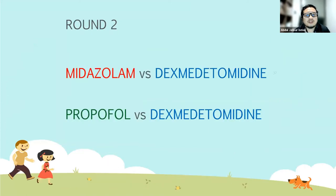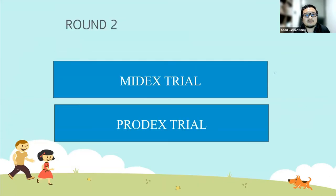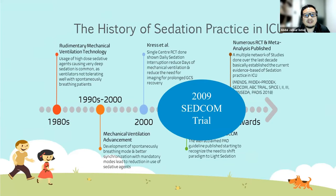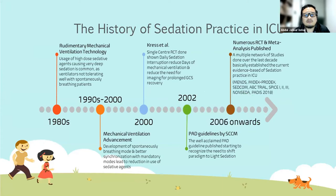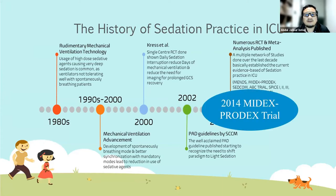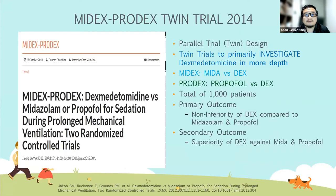Round two: as dexmedetomidine became more popular, the MIDEX-PRODEX twin trials were conducted in 2014 — parallel trials with 1,000 patients total. MIDEX compared midazolam versus dexmedetomidine; PRODEX compared propofol versus dexmedetomidine. The primary outcome was non-inferiority of dexmedetomidine compared to midazolam and propofol. The 2013 PAD guideline update had already adopted the SEDCOM results and recognized dexmedetomidine, formally adopting RASS minus two to plus one as the target.